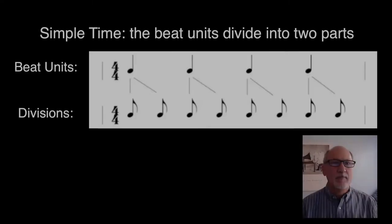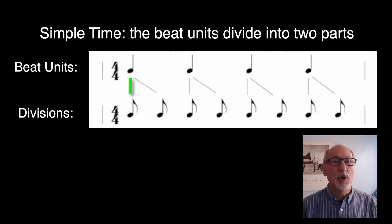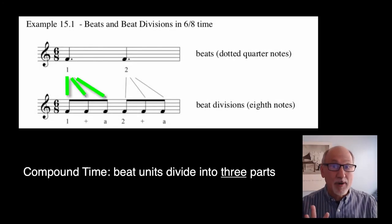Chapter 15, Compound Time. In simple time, the beat units divide evenly into two parts. In contrast, the beats in compound time divide evenly into three parts.